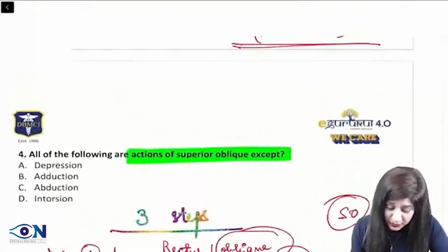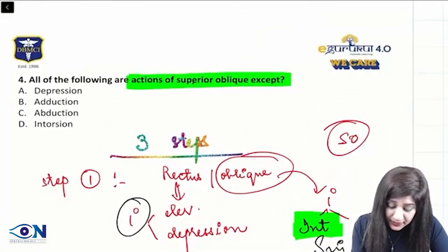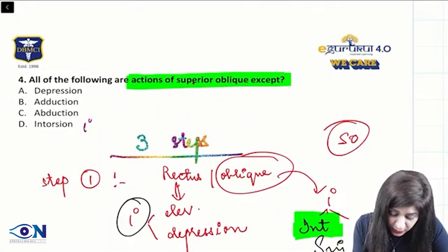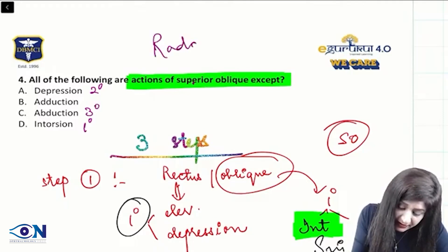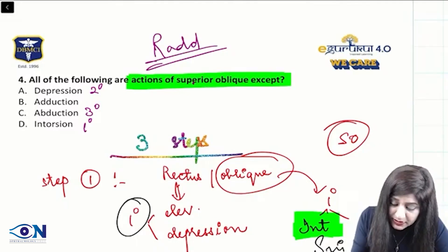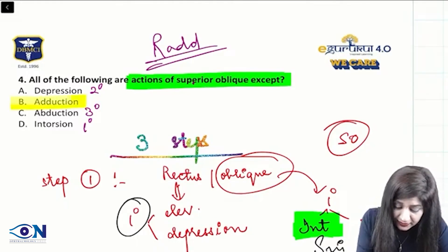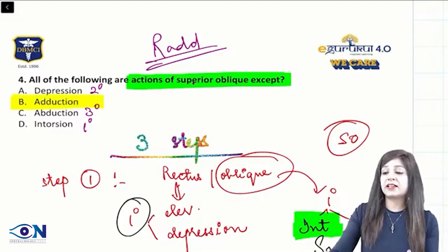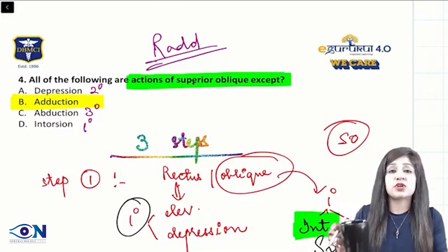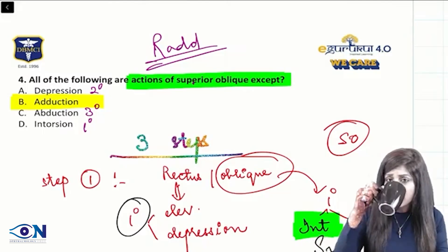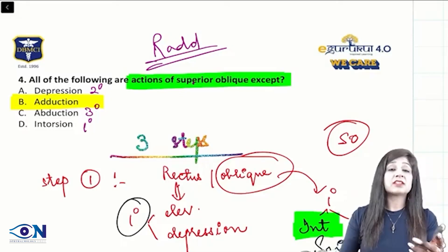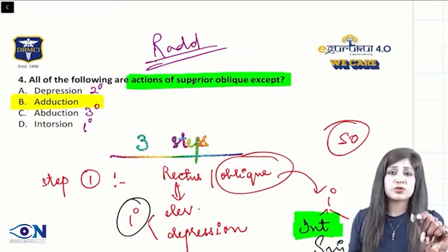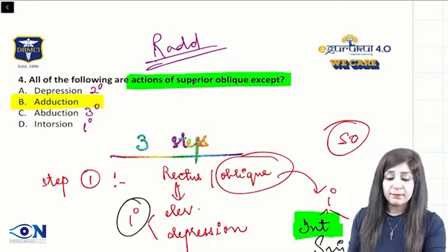So, looking at the original question now: superior oblique — primary action is intorsion, secondary action is depression, and tertiary action is abduction. RAT means recti are adductors, and since this is an oblique muscle, the tertiary action is abduction, not adduction. This is an important concept and you can get this in upcoming examinations — how to find out the actions of the extraocular muscles.